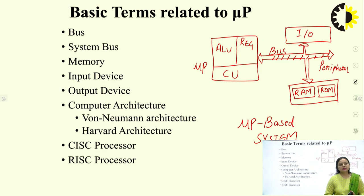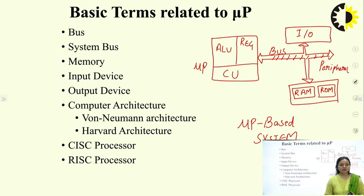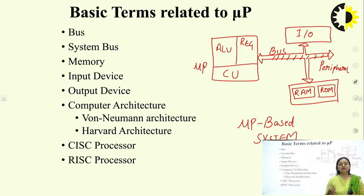Processors are also classified into RISC and CISC categories. RISC stands for Reduced Instruction Set — it has fewer instructions with simpler syntax. CISC stands for Complex Instruction Set — it has a larger, more complex instruction set where single instructions can perform multiple operations, but larger instruction sizes can take longer to execute.